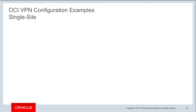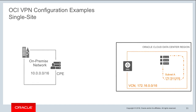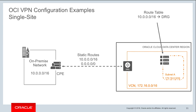IPSec VPN supports both single on-premises data center connectivity and multiple on-premises locations. For a single site, the workflow is: create a DRG and attach it to your VCN, create a virtual CPE object of your router, then create an IPSec connection specifying static routes — include the CIDR range for your on-premises network and also 0/0 for any future growth or expansion.